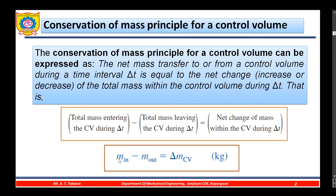If m_in is greater than m_out, then delta m will be positive, which implies there is an increase in mass of the control volume. In another case, if m_in is less than m_out, then delta m will be negative, implying there is a decrease in mass of the control volume. This is how we express the conservation of mass principle in terms of m_in, m_out, and delta m.